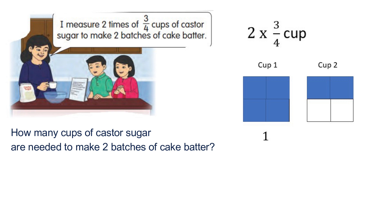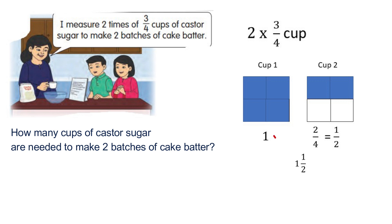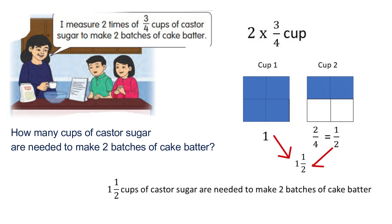Look at the diagram of cup one — we have one whole, which is one. And the diagram of cup two — we have two parts out of four shaded. So the fraction for the diagram will be one and one over two. We need one and one over two cups to make two batches of cake batter.